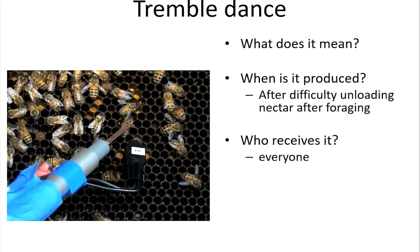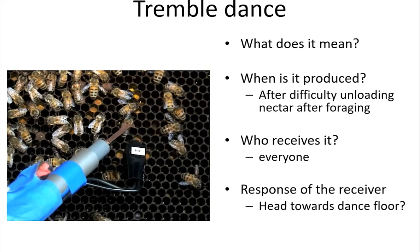The receivers of the tremble dance signal are everybody in the nest, because unlike the waggle dance — which is produced only in the dance floor area at the bottom of the hive where foragers hang out — when they make the tremble dance they purposely leave that area and walk all throughout the nest doing it, essentially broadcasting to the whole nest. We think it means: increase your efforts toward nectar collection. Tom showed that after the burst of tremble dances was completed, there was an increase in nectar receiving, and the equilibrium between collection and processing got back in balance, and foraging could then commence again.